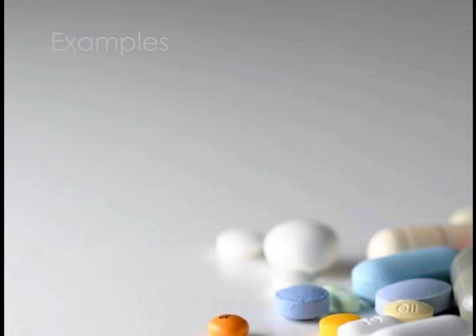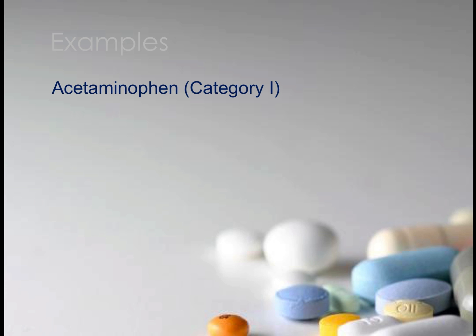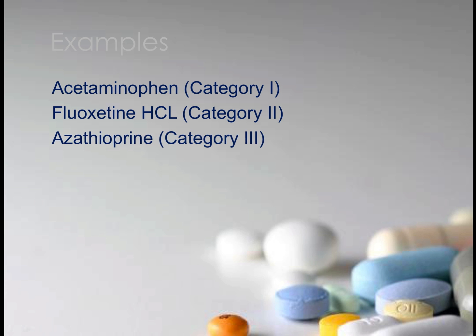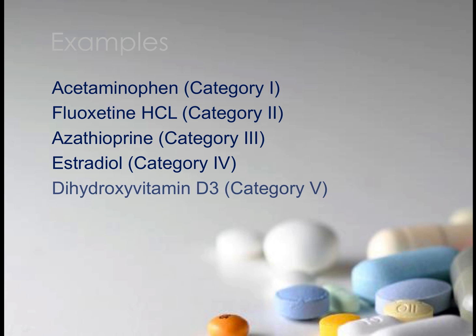Here in this slide, using the Affigility Solutions OHC scheme, you can see how we assigned an occupational health category to each of these compounds. For example, acetaminophen is a category 1, fluoxetine hydrochloride is a category 2, azathioprine is a category 3, estradiol is a category 4, and dihydroxyvitamin D3 is a category 5. There are many different OHC schemes, so depending on the system your company adopts, the OHC assignment may differ from what's shown on the screen.